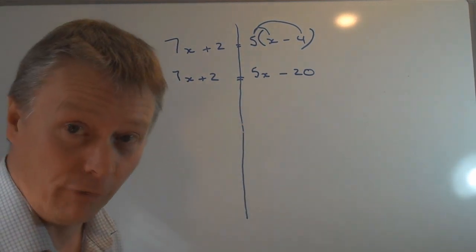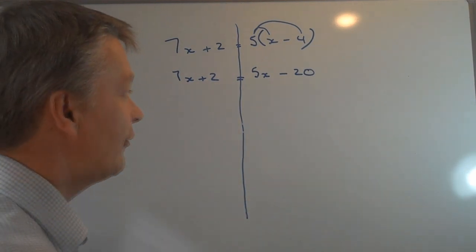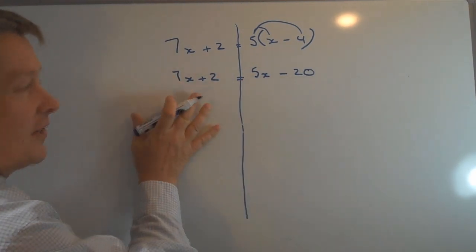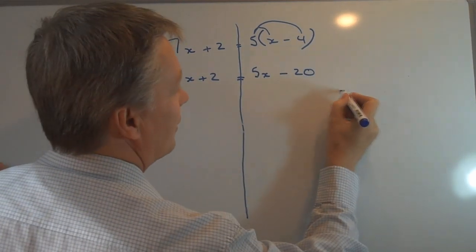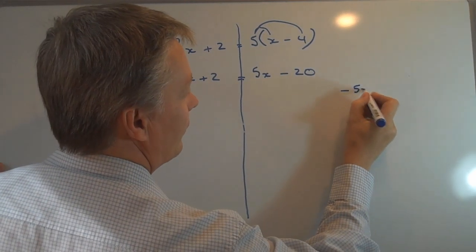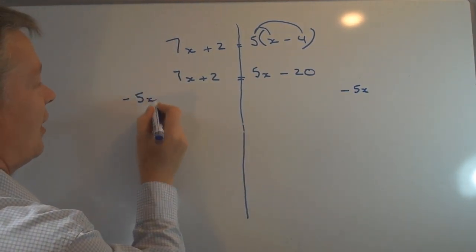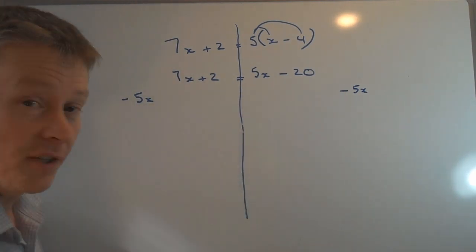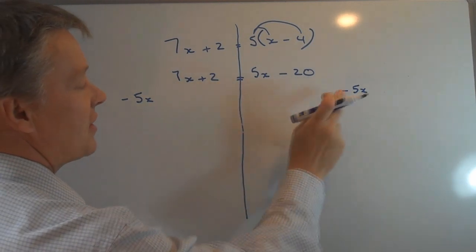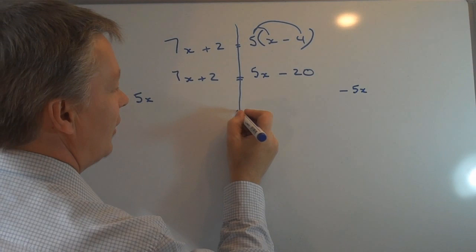I have 5X there and I'm going to get rid of it. The way I'm going to get rid of it is I'm going to take it away, but if I take it away from this side I have to take it away from this side as well. So 5X I'm going to take away from this side as well, and it's very useful to write these things down so you don't forget what you're doing.